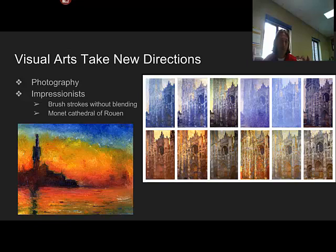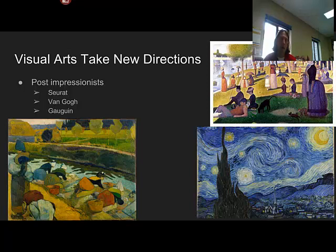Post-Impressionists go in new directions. Seurat, in the upper right, uses lots of little dots — if you zoom in on his painting you can see all those tiny dot brush strokes. Van Gogh, in the lower right, uses bolder colors with an almost dreamy quality. Gauguin, in the lower left, uses bright colors with dark contrasting. They're taking Impressionism and experimenting with it, playing around to do other things.